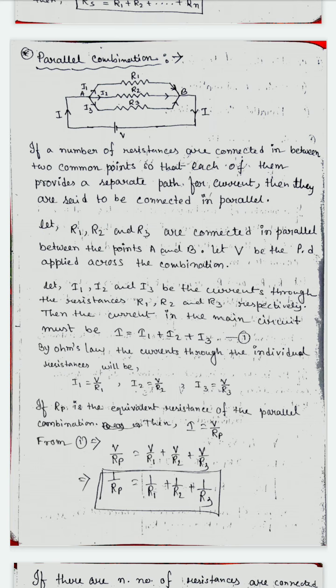So in series — end to end connection — current is the same, potential is different. But in parallel, they have two common points, so potential is the same, but the current is different: through R1 that is I1, through R2 that is I2, and through R3 that is I3. Now if we apply Ohm's law, we get I1 = V/R1, I2 = V/R2, and I3 = V/R3.